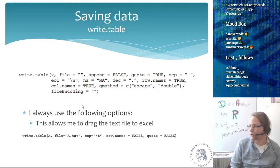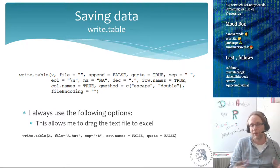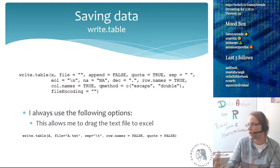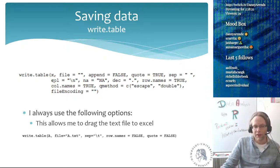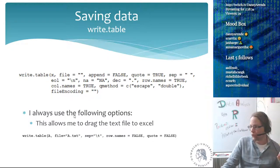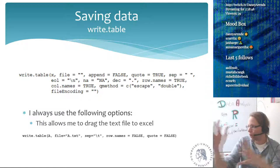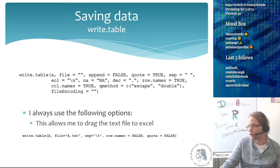Once we have our matrix and have done our subsetting, we often want to write it out to a file. My advice is: an R script should begin with loading data, doing manipulations, then writing out a new matrix. A next script then takes that matrix and does further manipulations or statistics. For `write.table()`, I always use options that allow me to drag the text file directly into Excel, since Excel only supports tab separators.